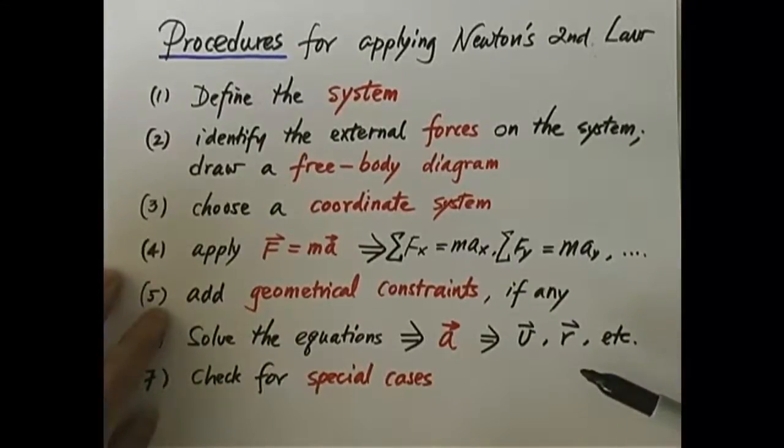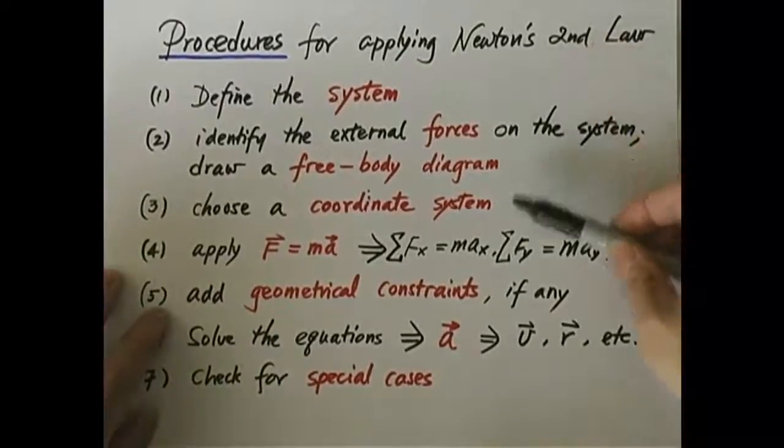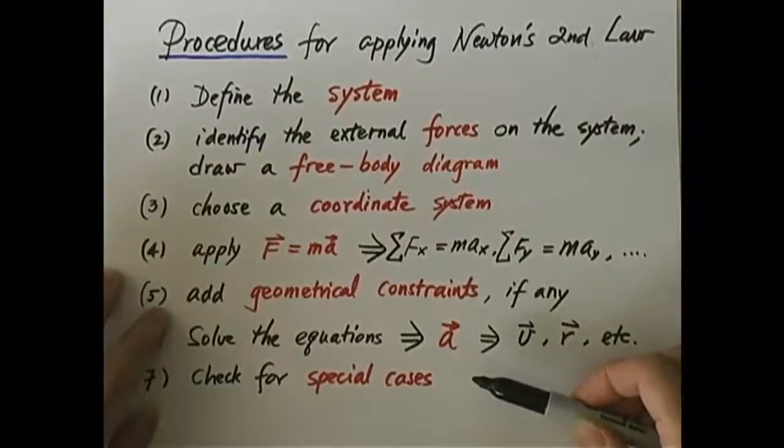And then the question is, does your answer reduce to these expected special cases? When you say set the angle equal to zero or set the mass to be infinity, whatever, do you get the right answer back? If you do, that is a good testimony to the possibility that your answer could be right. It also helps you understand the answer better. So this is a set of procedures that we follow to solve problems with Newton's second law.